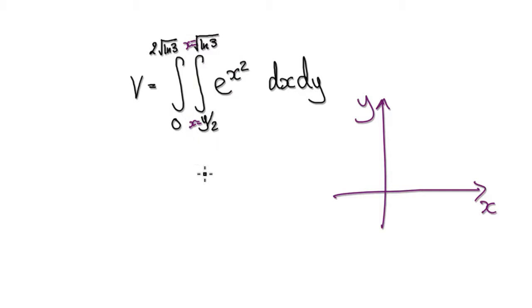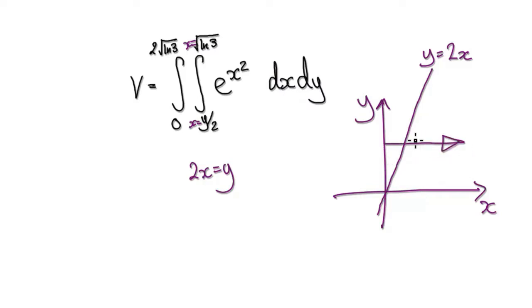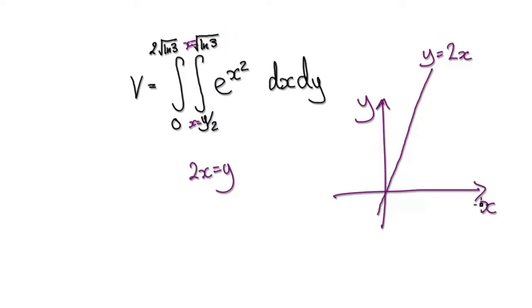But then what does this mean? Let's just draw the graph. Multiplying both sides by 2 gives 2x equals y. So let's draw this line — it looks like this. This is y equals 2x. So currently we are moving parallel to the x-axis, moving from this diagonal line all the way to x equals root natural log of 3.